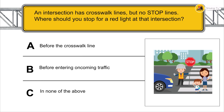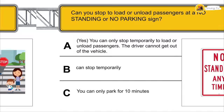An intersection has crosswalk lines but no stop lines. Where should you stop for a red light at that intersection? Before the crosswalk line.